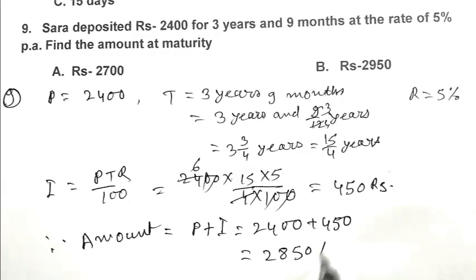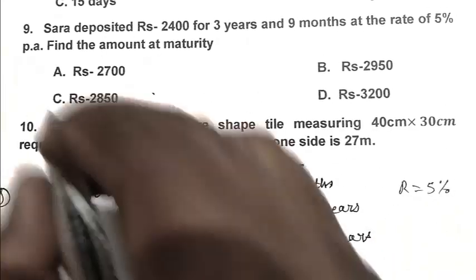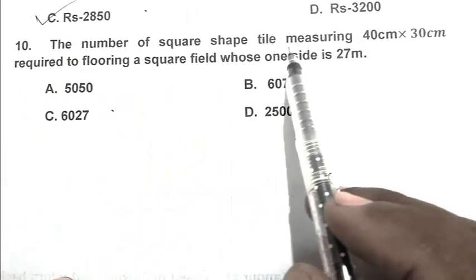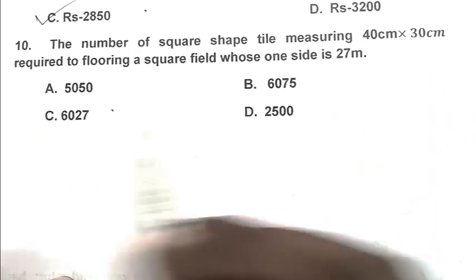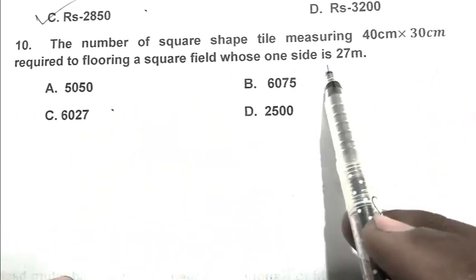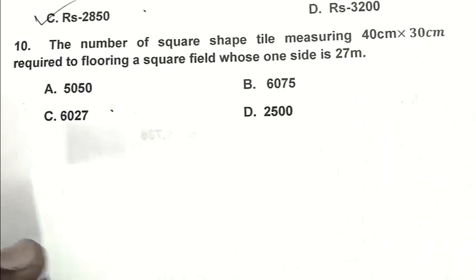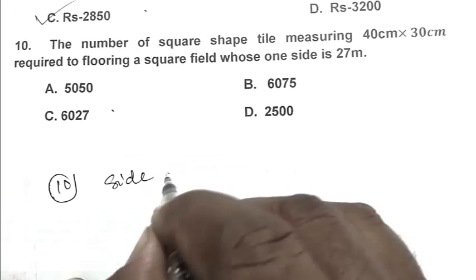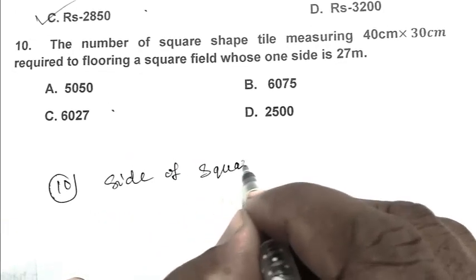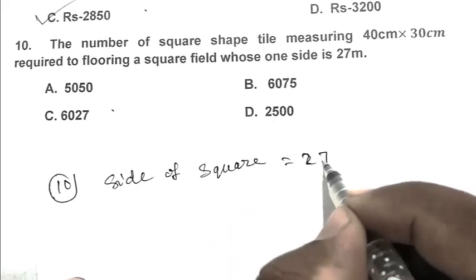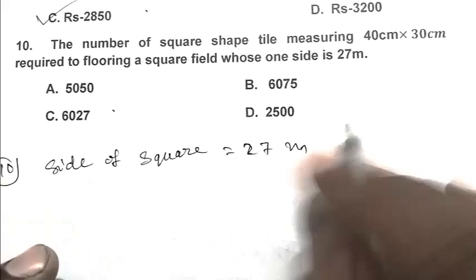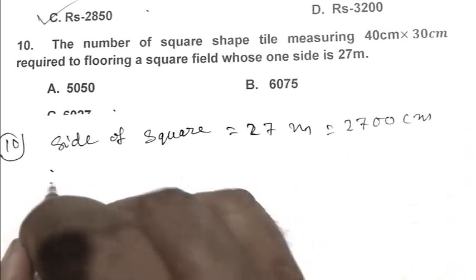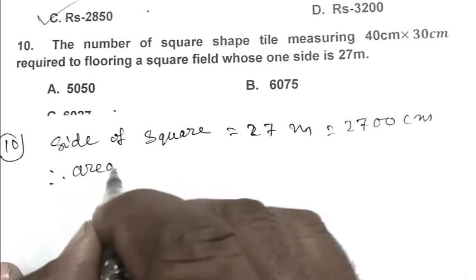Question number 10: The number of square shape tiles measuring 40 centimeter by 30 centimeter required to flooring a square field whose one side is 27 meter. Side of square is 27 meter. We convert meter into centimeter, it's become 2700 centimeter. So area of square is 2700 centimeter square.